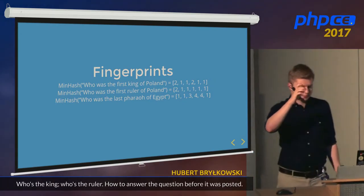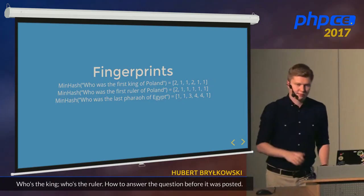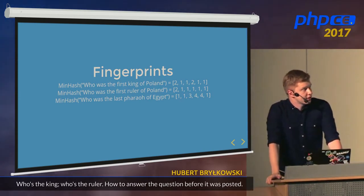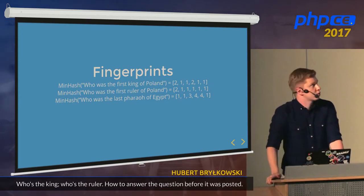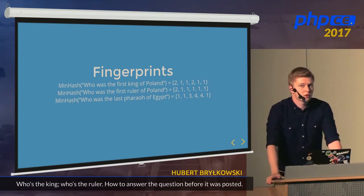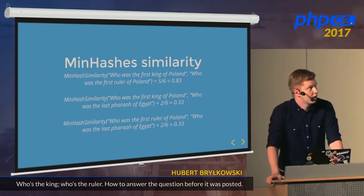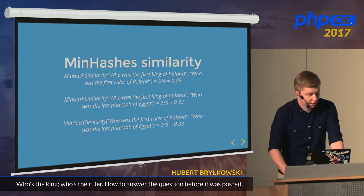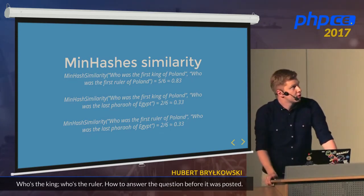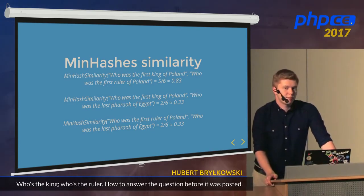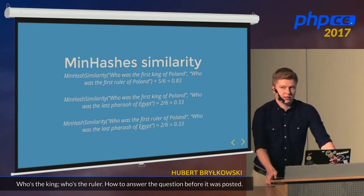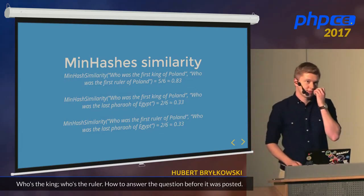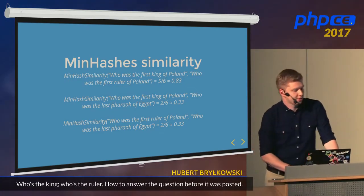Let's look at the six-part fingerprint. We can see that the more similar the questions are, the more similar their fingerprints are. And how similar exactly? They agree in about as many positions as their Jaccard index would suggest. Was that by accident? Well, a little — because it's probability.